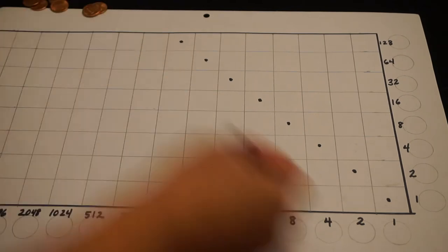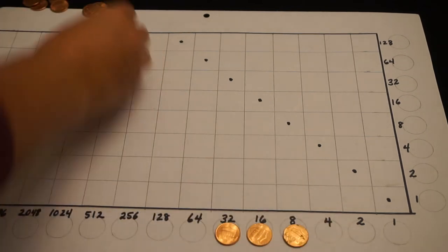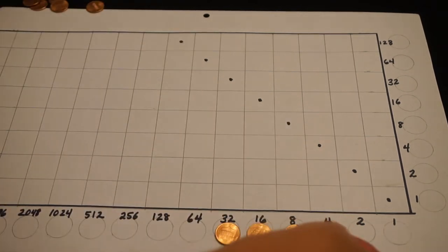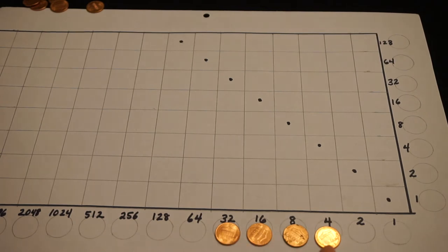If I put a 16 with that, I'm up at 48. If I put an 8 with that, I have 56, plus 4 more is 60. So these numbers add up to 60.